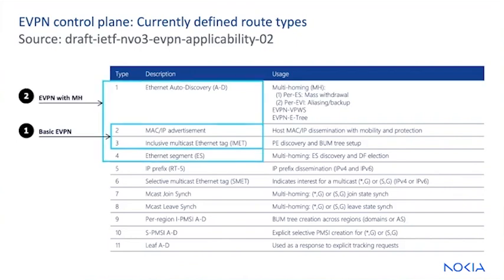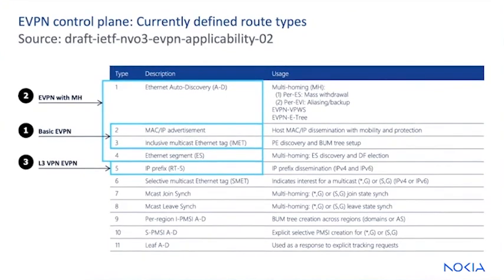The second group is for advertising multi-homing capabilities. RT1 is for Ethernet segment auto-discovery and multi-homing support. It includes MAC address mass withdrawal messages and propagation of service topology information. RT4 advertises multi-homing status for active-active and active-standby, as well as designated forwarder election. You can learn more about EVPN multi-homing in our Tech Talks in 10 multi-homing video.